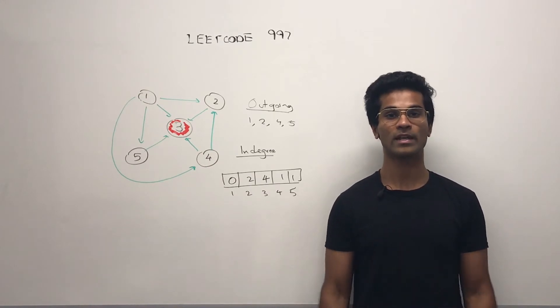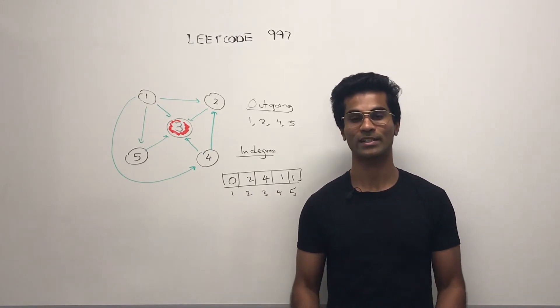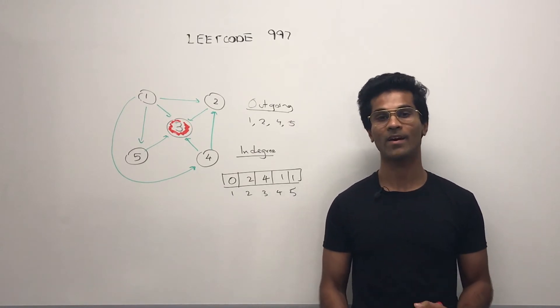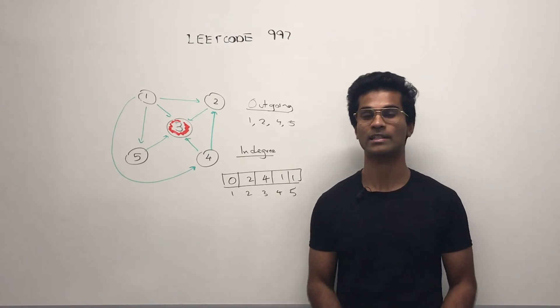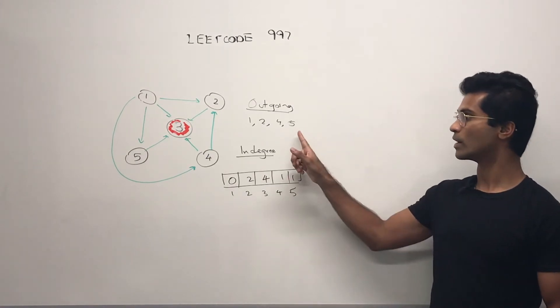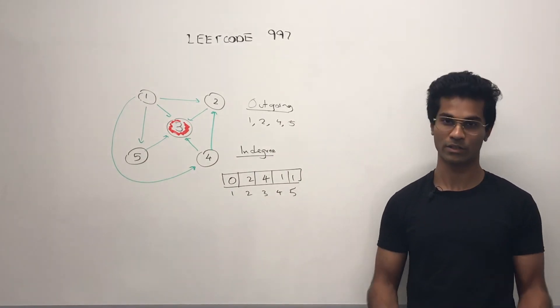So we know the type of node that we're looking for. We know that any node which has an outgoing edge cannot be the town judge. So we can have a set of every single node that has an outgoing edge. So in our case, 1, 2, 4, and 5 all have outgoing edges.